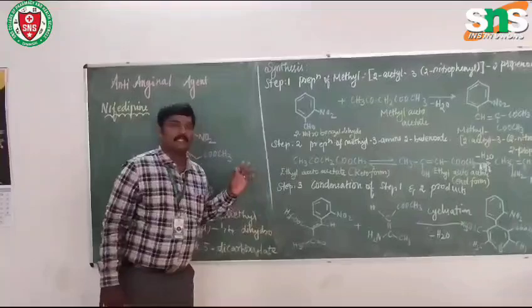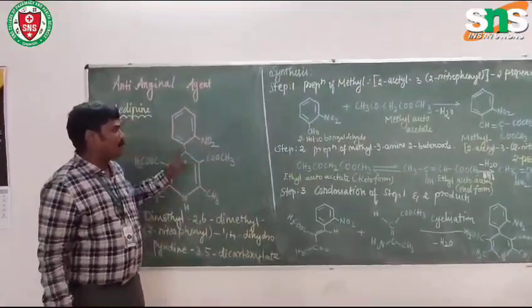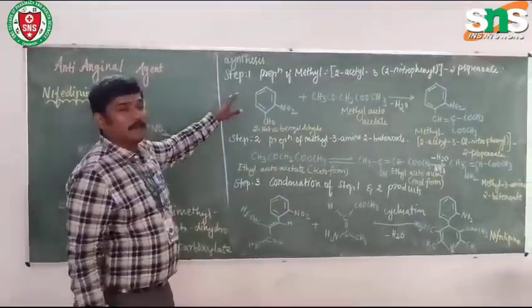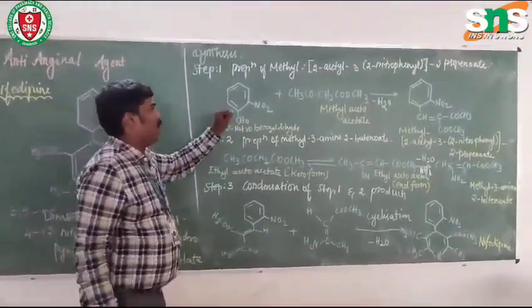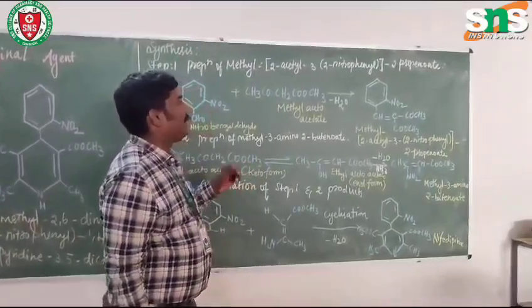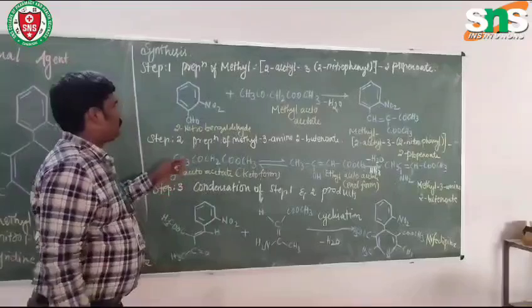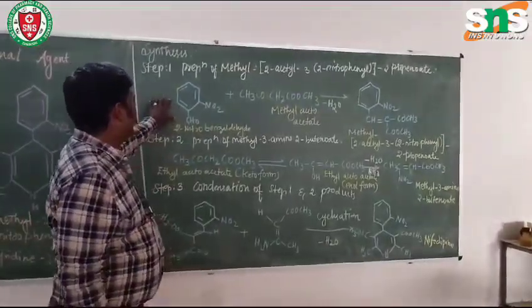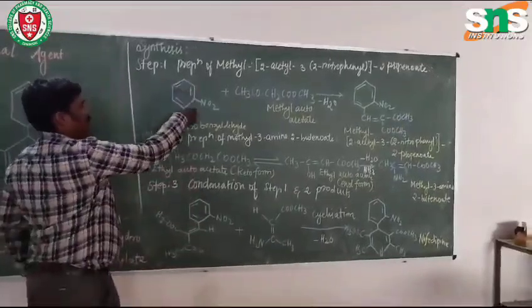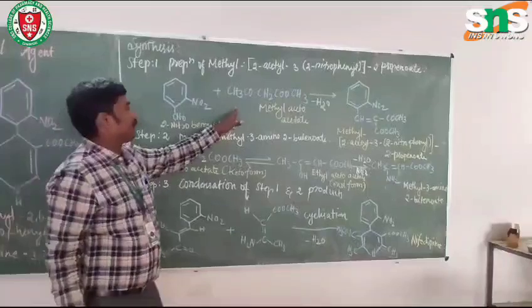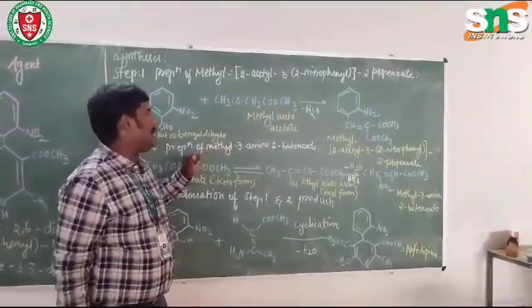So let us see the synthesis of dipthipine. It is having three steps. First one is preparation of ethyl 2-acetyl-3-(2-nitrophenyl) propenoate. This is the reaction of 2-nitrobenzaldehyde - benzaldehyde which in the second position nitro group is present.